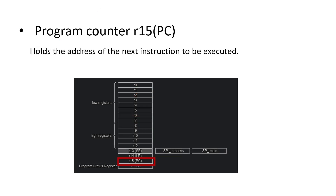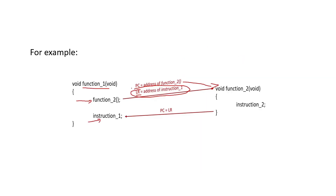The program counter register (PC) holds the address of the next instruction to be executed. As shown in the previous example, the PC is used to load the next instruction address, directing the CPU to where it should execute next.